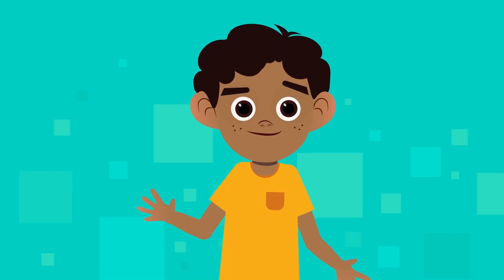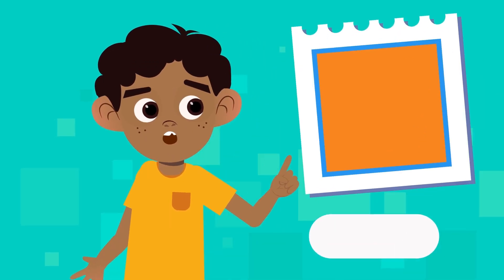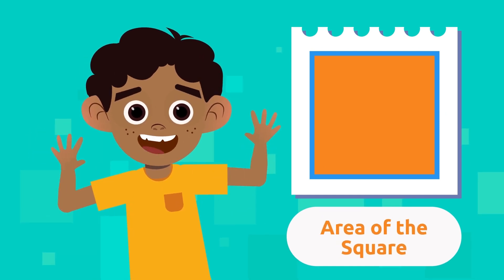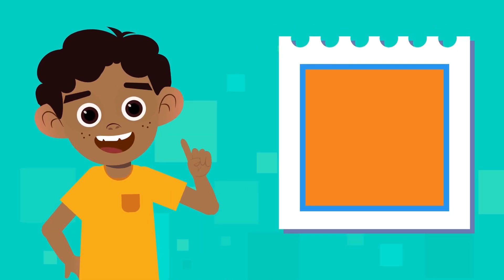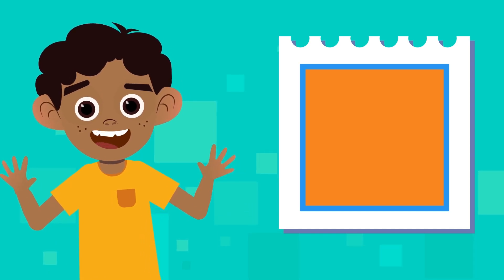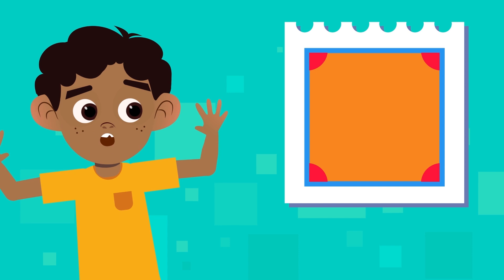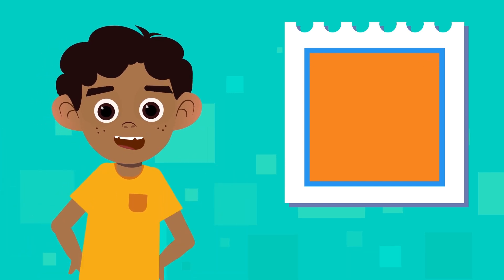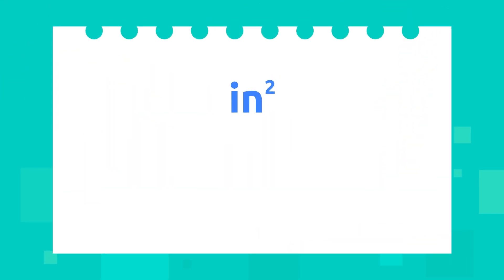Hello friends! Today we're going to learn how to calculate the area of a square, also known as the surface area of the square. Before we start, let's recap what a square is. A square is a plane figure with four equal sides that are parallel to each other and has four right angles. That's why we say a square is a regular polygon.